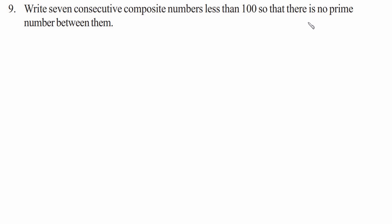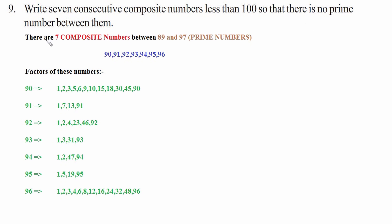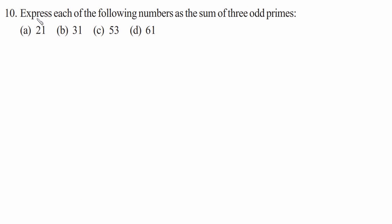Question nine: write seven consecutive composite numbers less than 100 so that there is no prime number between them. The seven composite numbers are 90, 91, 92, 93, 94, 95, and 96, which lie between the primes 89 and 97. For instance, 95 has factors 1, 5, 19, and 95.